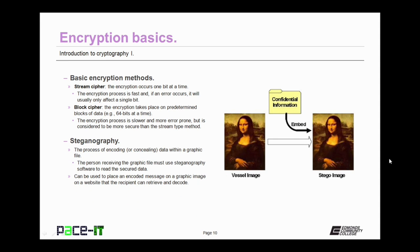There are also different types of encryption methods. Some encryption algorithms are stream cipher algorithms. The encryption occurs one bit at a time. The encryption process is fast, and if an error occurs, it will usually only affect a single bit. Then there are block cipher algorithms. The encryption takes place on predetermined blocks of data, at 64 bits of data at a time, or 128 bits of data at a time. The encryption process is slower and more error prone, but is considered to be more secure than the stream cipher type.